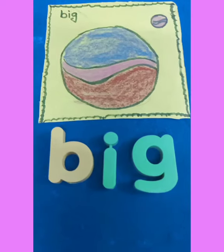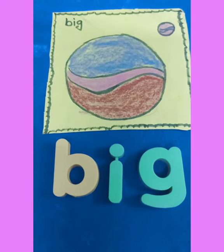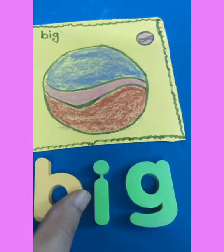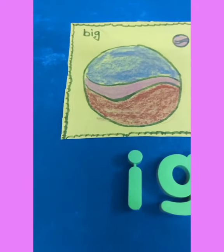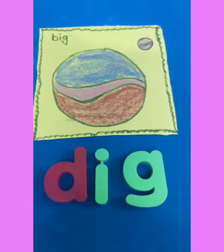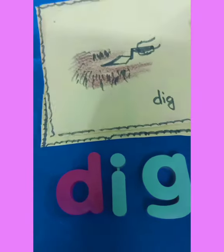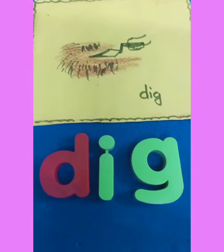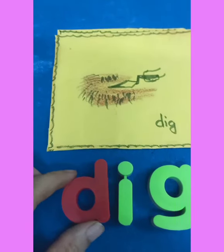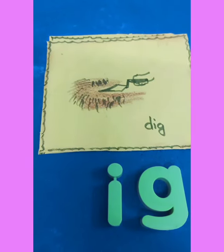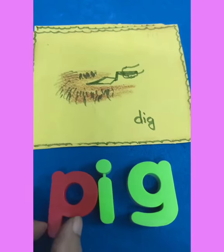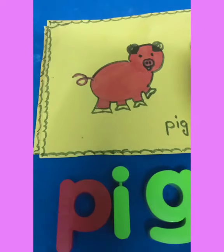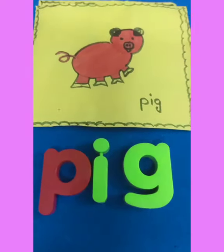BIG — and here children, you can see this is BIG. Now if I change the letter B and attach D, it becomes DIG. DIG means to dig or Khodna. Now again if I remove D and attach P, it becomes PIG. This is a pig.